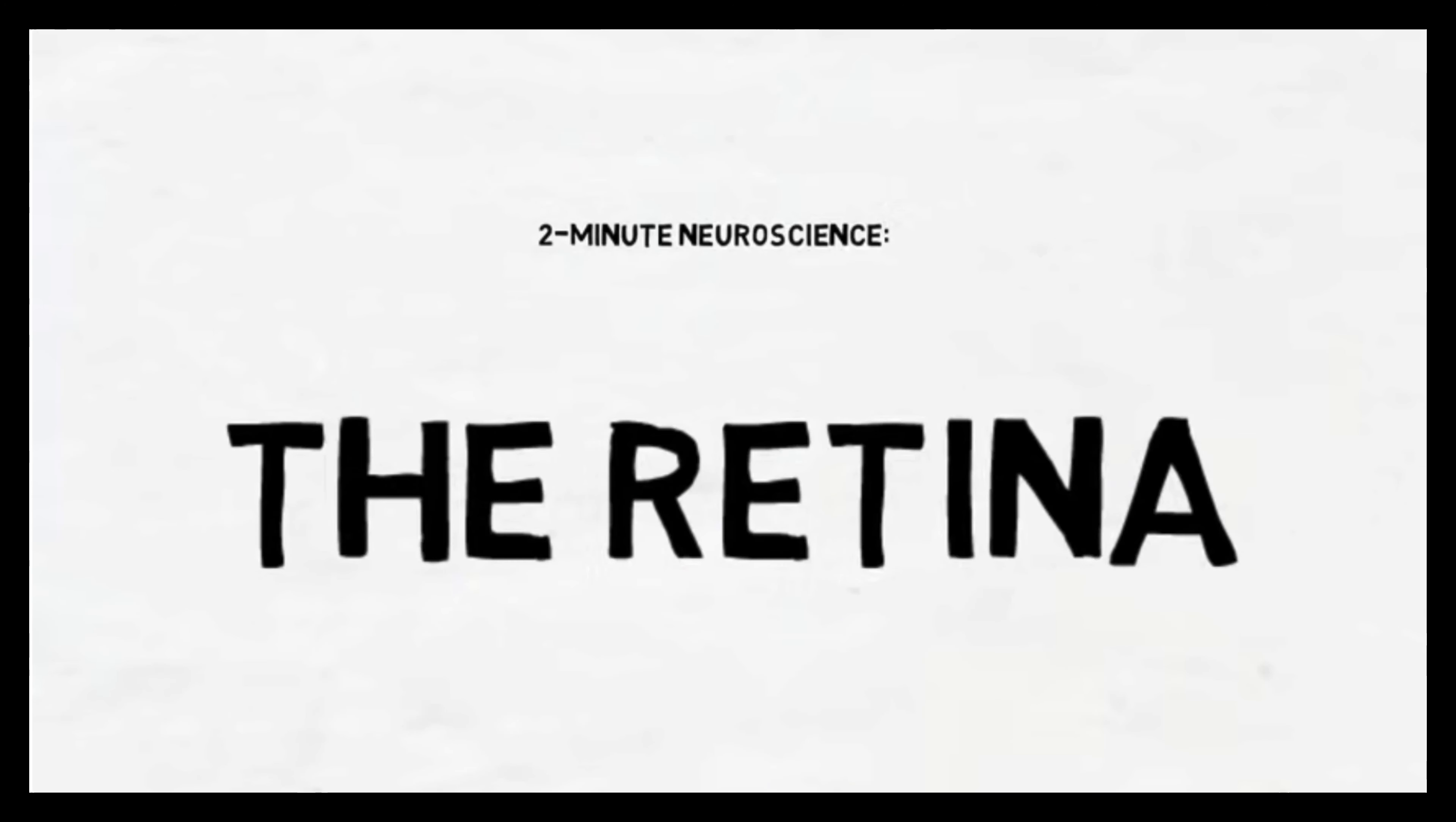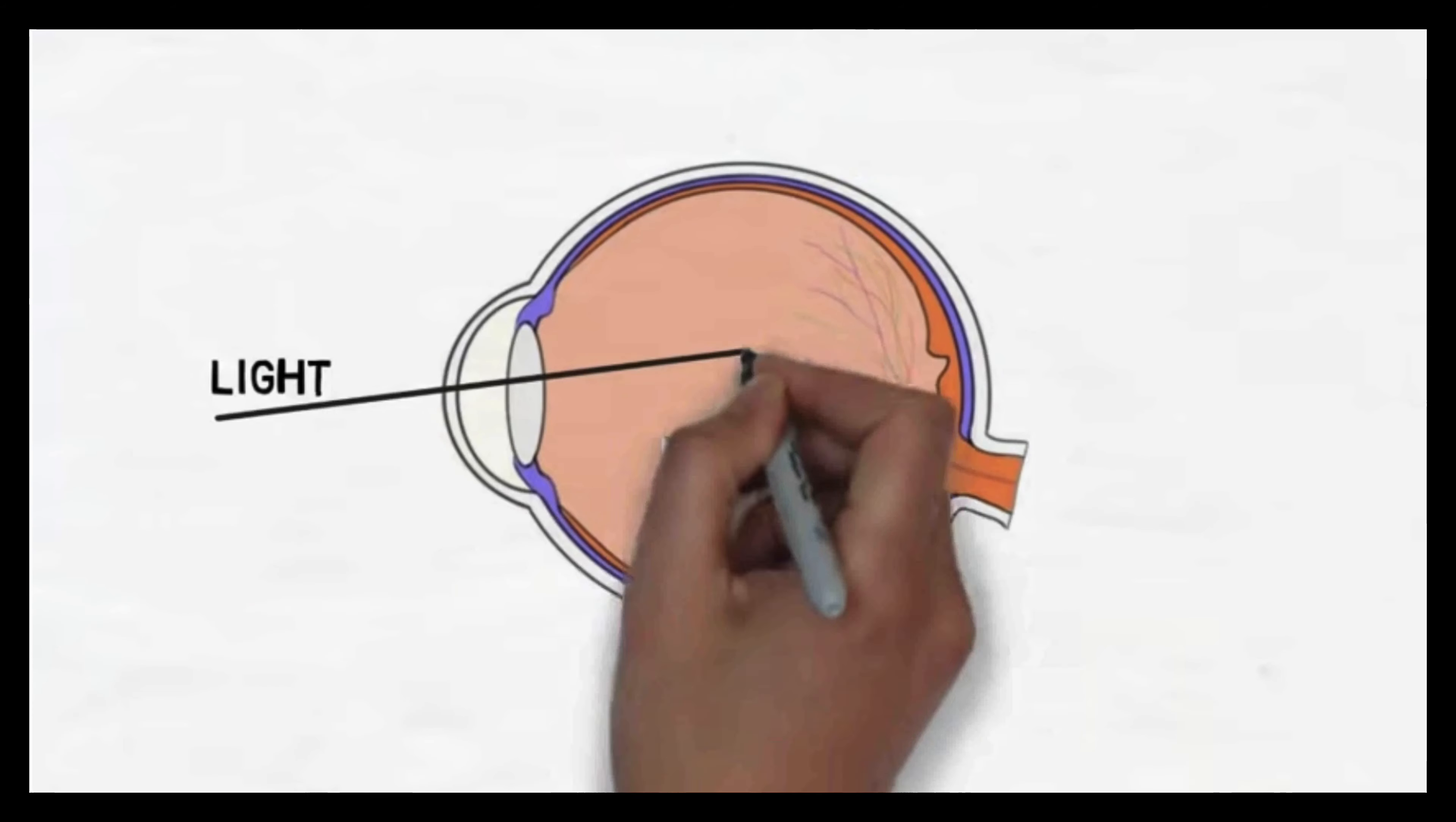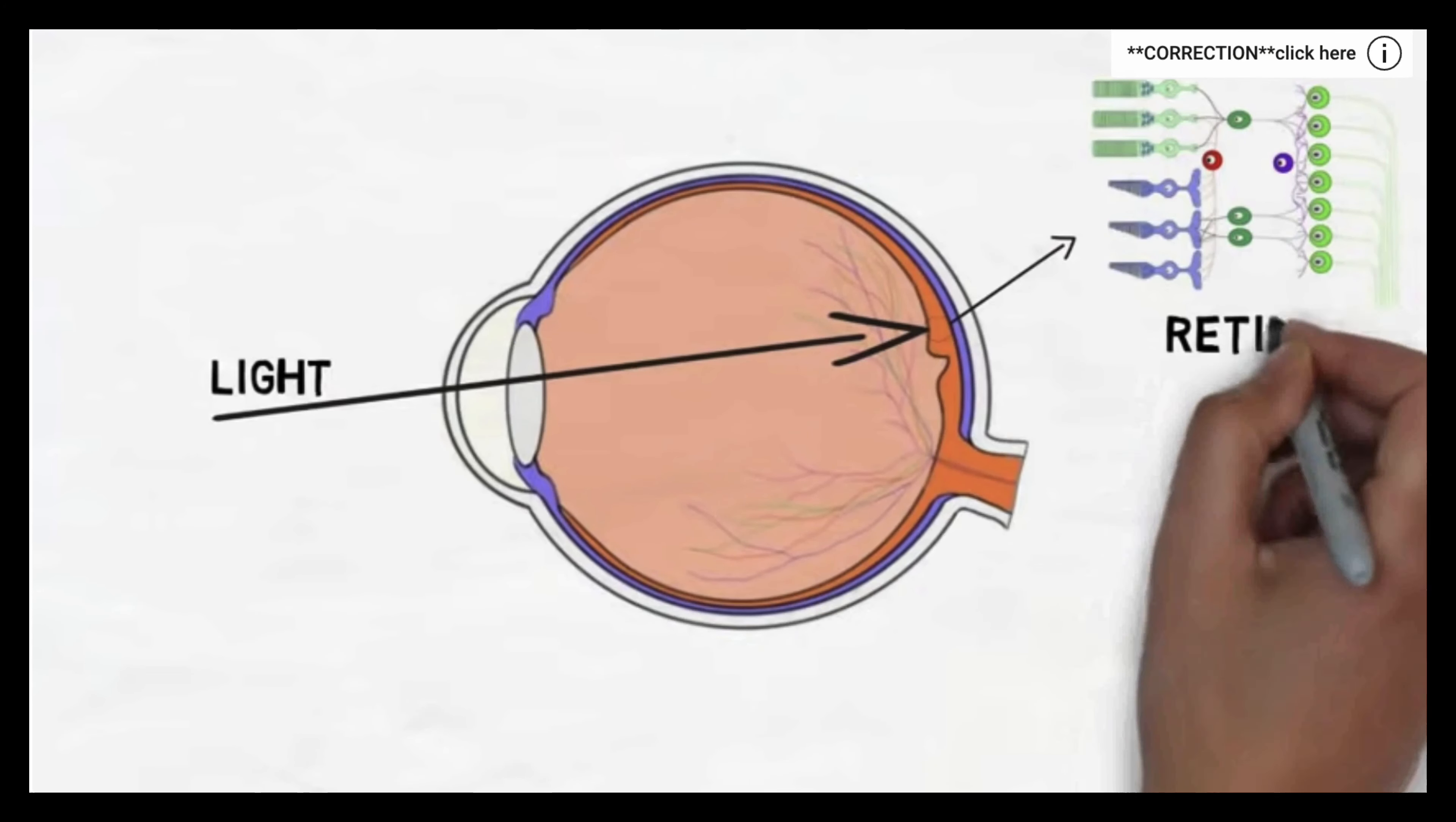In this installment, I will discuss the retina. The retina contains the neural component of the eye. When light reaches the back of the eye, it enters the cellular layers of the retina.